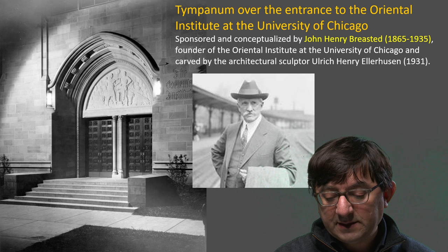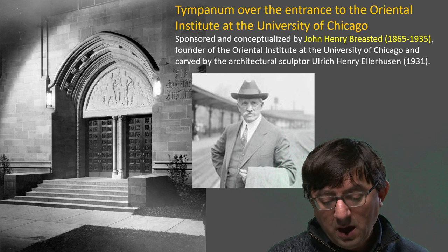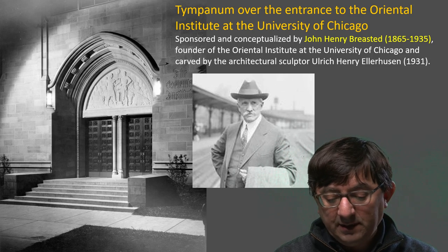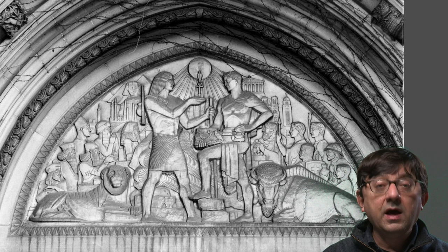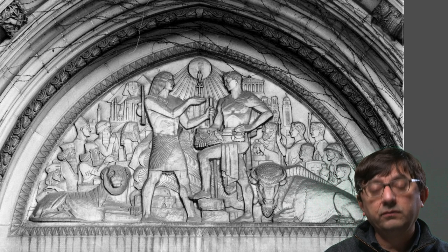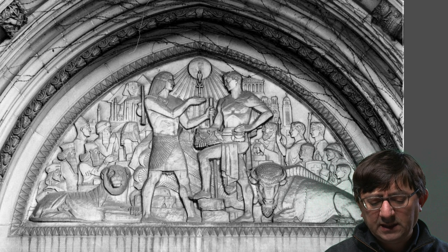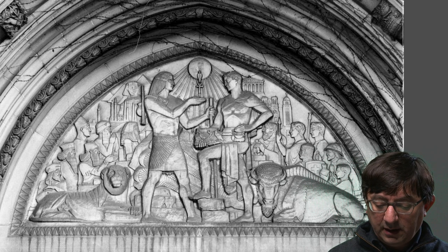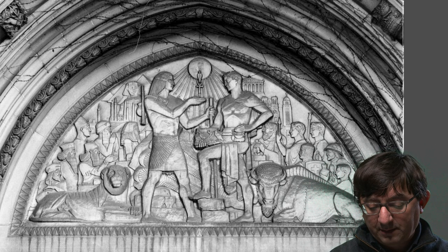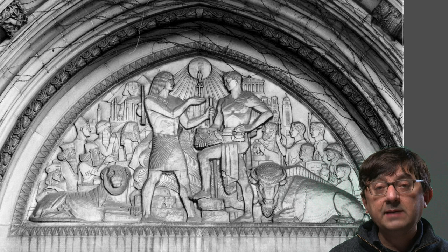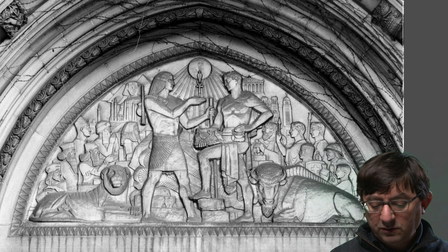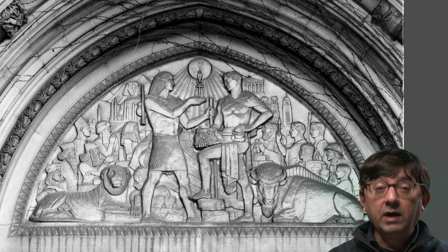Upon the foundation of the Institute, James Breasted commissioned a very interesting relief panel as the tympanum over its entrance, designed by Breasted himself and sculpted by Ulrich Ellerhausen. In this fascinating scene, the personification of the East — an ancient Egyptian scribe — hands over a wall fragment with an inscription from a 5th dynasty temple to the personification of the West, a semi-nude classical figure, meant to represent the eastern origin of writing systems.